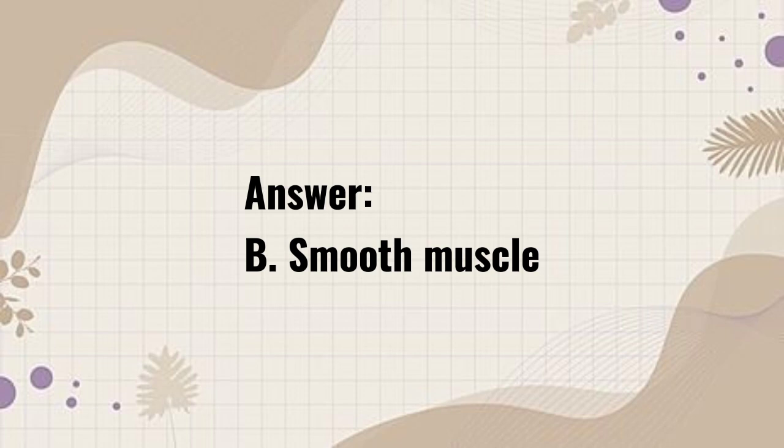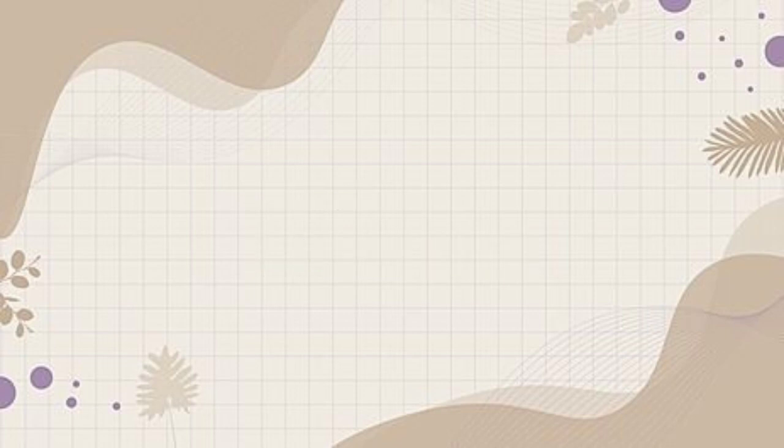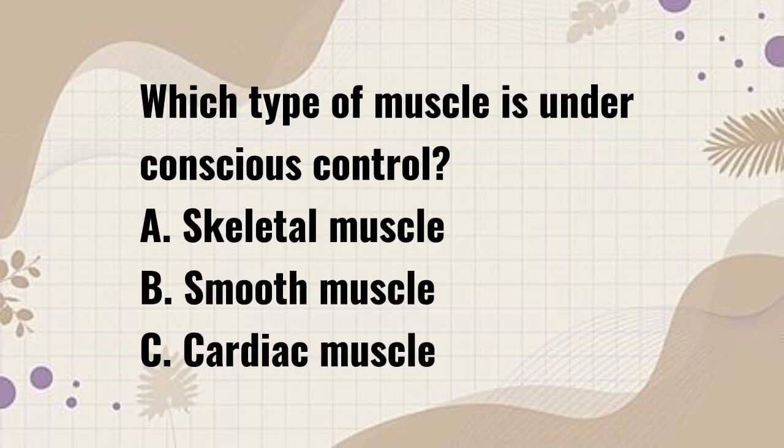Which type of muscle is under conscious control? A. Skeletal muscle. B. Smooth muscle. C. Cardiac muscle.